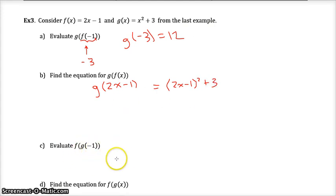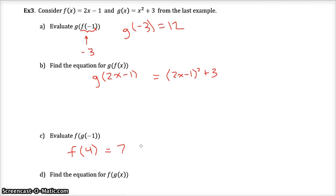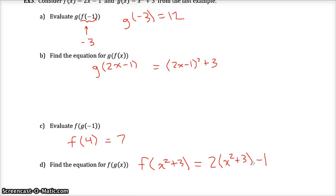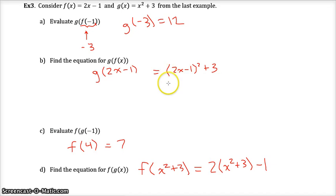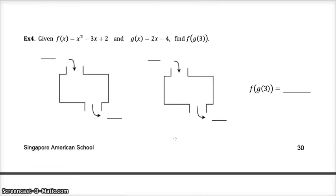Evaluate f of g of -1. Now this is in a different order. We're working inside the parentheses first. g of -1 is -1^2 + 3, that's 4. So what I'm really looking for is f(4), and f(4) should be 7. Find the equation for f of g of x. Really want to take f of g of x, and g of x is all this, and f of that. f takes inputs, multiplies them by 2, and subtracts 1. So 2 times that mess and then subtract 1. You could simplify that if you need to, but it's not necessarily required. Notice how f of g of x looks different than g of f of x.